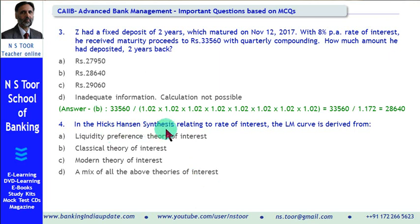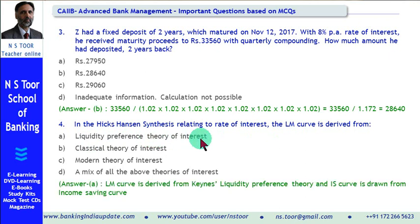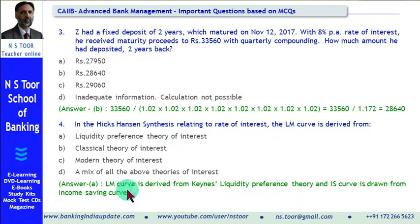The Hicks-Hansen synthesis is based on two theories: Keynes' theory of liquidity preference and the classical theory of interest. The IS curve is derived from the classical theory of interest — relating to investment and saving. The LM curve is derived from Keynes' liquidity preference theory. So the answer is option A: the LM curve is derived from the liquidity preference theory of Keynes.